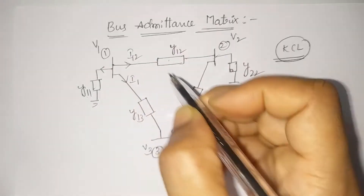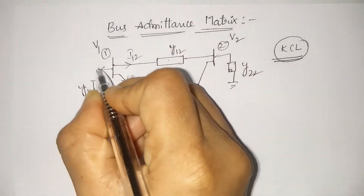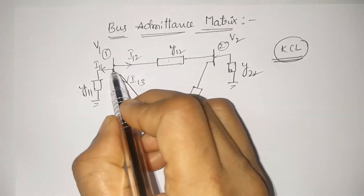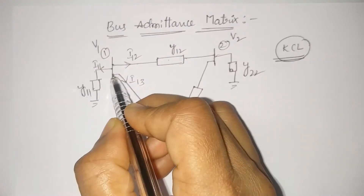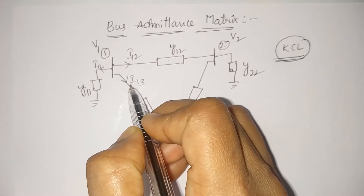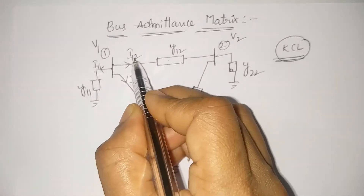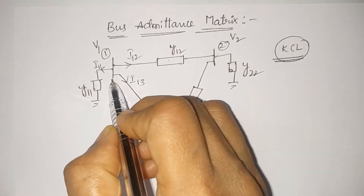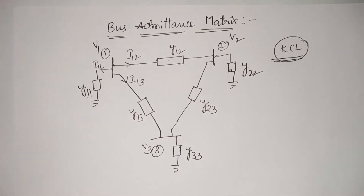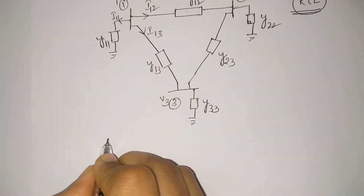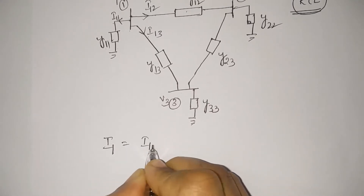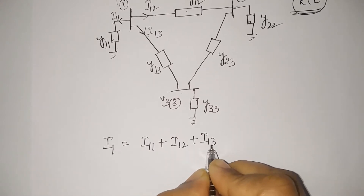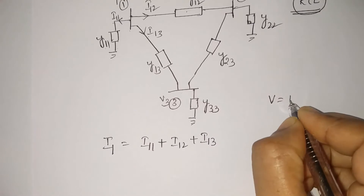Applying KCL at bus 1: I11 plus I12 plus I13 equals zero. Let the overall impressed current at bus 1 be I1, then I1 equals I11 plus I12 plus I13.